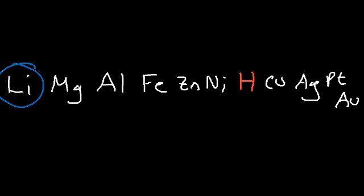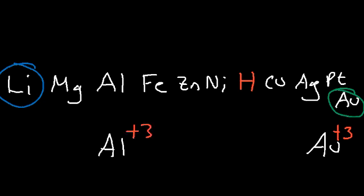Lithium is the most reactive metal on this list and is the strongest reducing agent — reducing agents like to give away electrons. Gold is the weakest reducing agent. However, the Au³⁺ ion is the strongest oxidizing agent among the metal cations listed. Comparing Au³⁺ and Al³⁺: Al³⁺ is a weak oxidizing agent, but Au³⁺ is a strong oxidizing agent.